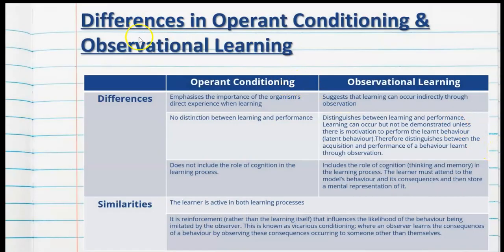Before we cover the Bobo Doll experiment, let's look at some key differences between operant conditioning and observational learning. Operant conditioning emphasises the importance of the organism's direct experience when learning. There's no distinction between learning and performance, and it does not include the role of cognition in the learning process. Observational learning, however, is different, and it suggests that learning can occur indirectly through observation.